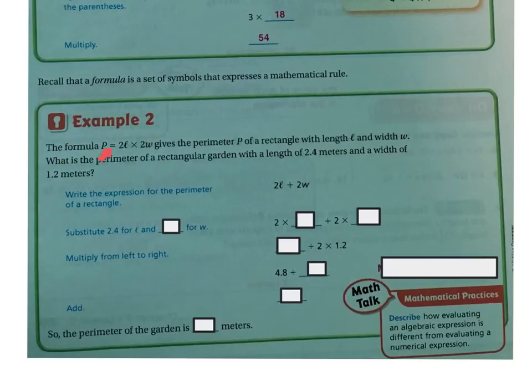Example 2. The formula P equals 2L plus 2W, where L is length and W is width, gives the perimeter of a rectangle. What is the perimeter of a rectangular garden with a length of 2.4 meters and a width of 1.2 meters? We have our rectangle, and the width is 2W and the length is 2L. The perimeter is 2L times 2W.